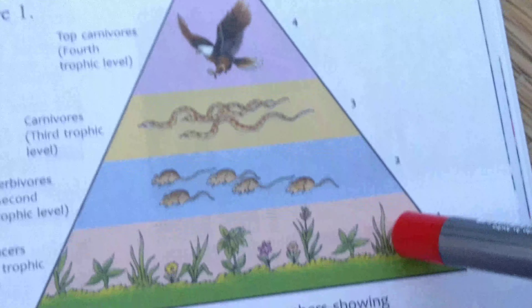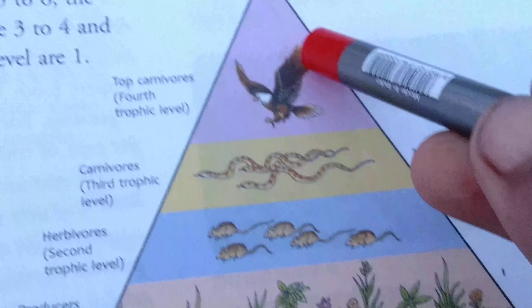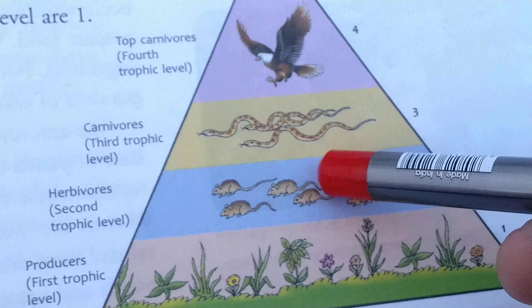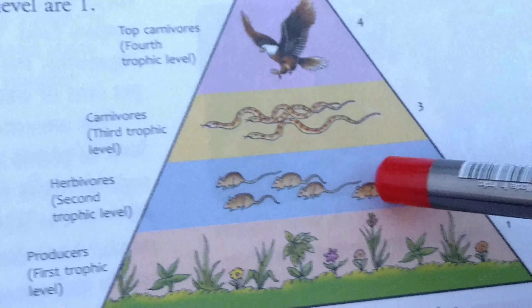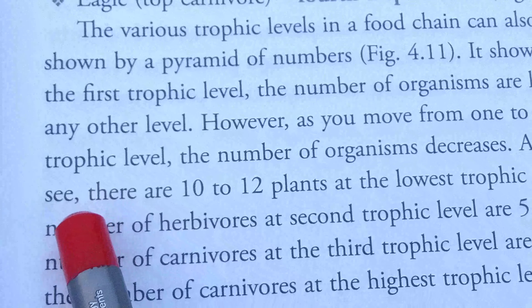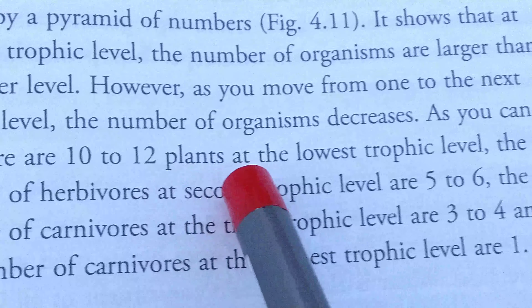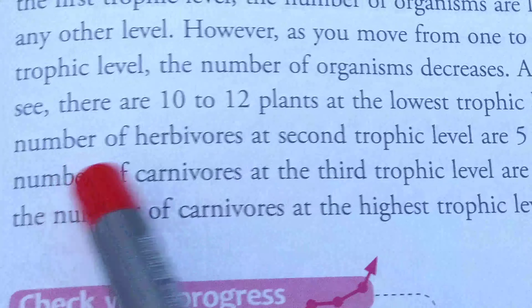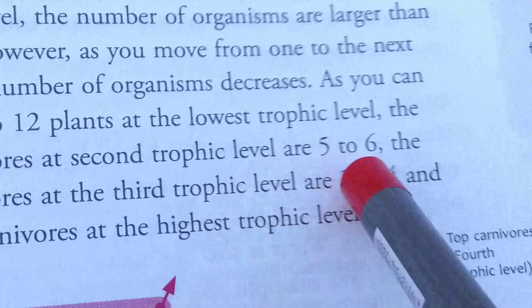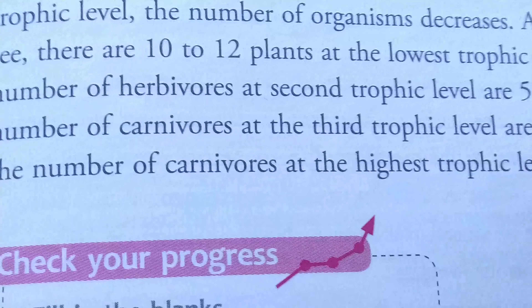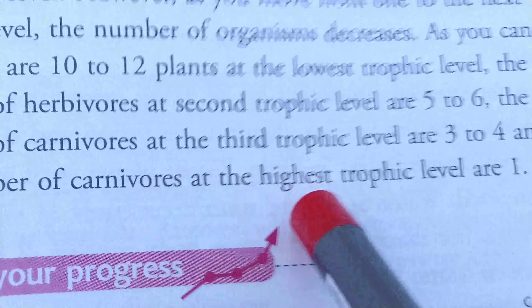A food chain operating in a grassland ecosystem: corn is the producer, next the primary herbivore is rat, then snake, and the top carnivore is eagle. The Trophic Levels in this food chain are as follows: corn acts as the first Trophic Level, rat acts as the second Trophic Level, snake is the third Trophic Level, and eagle acts as the top carnivore at the fourth Trophic Level.